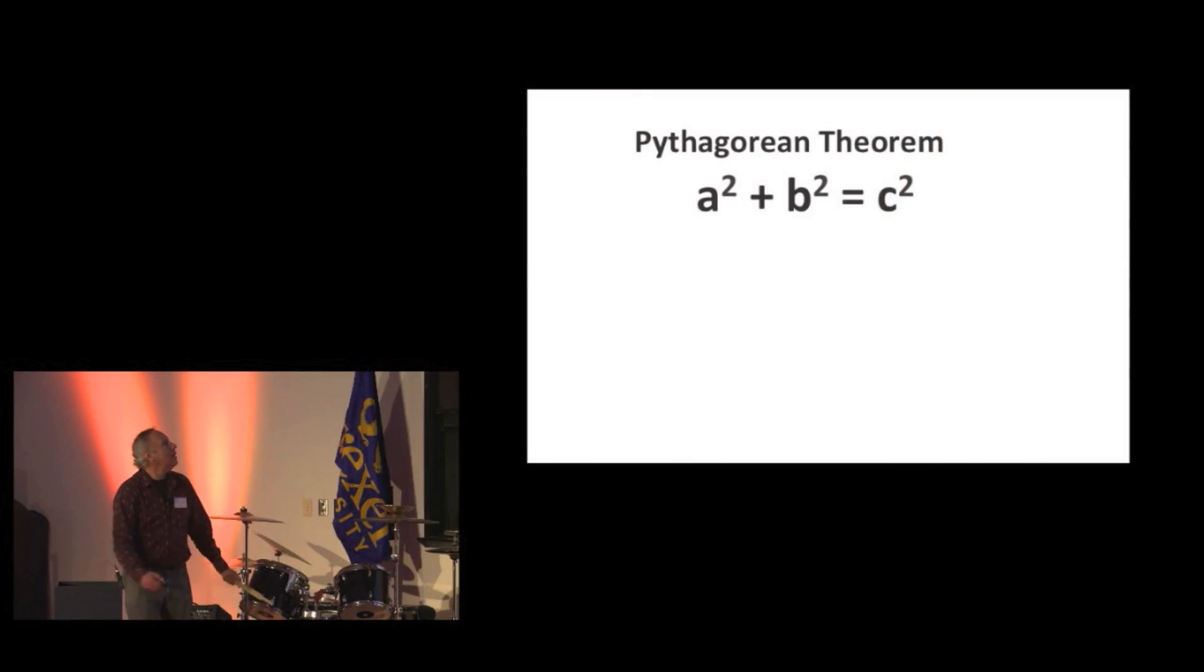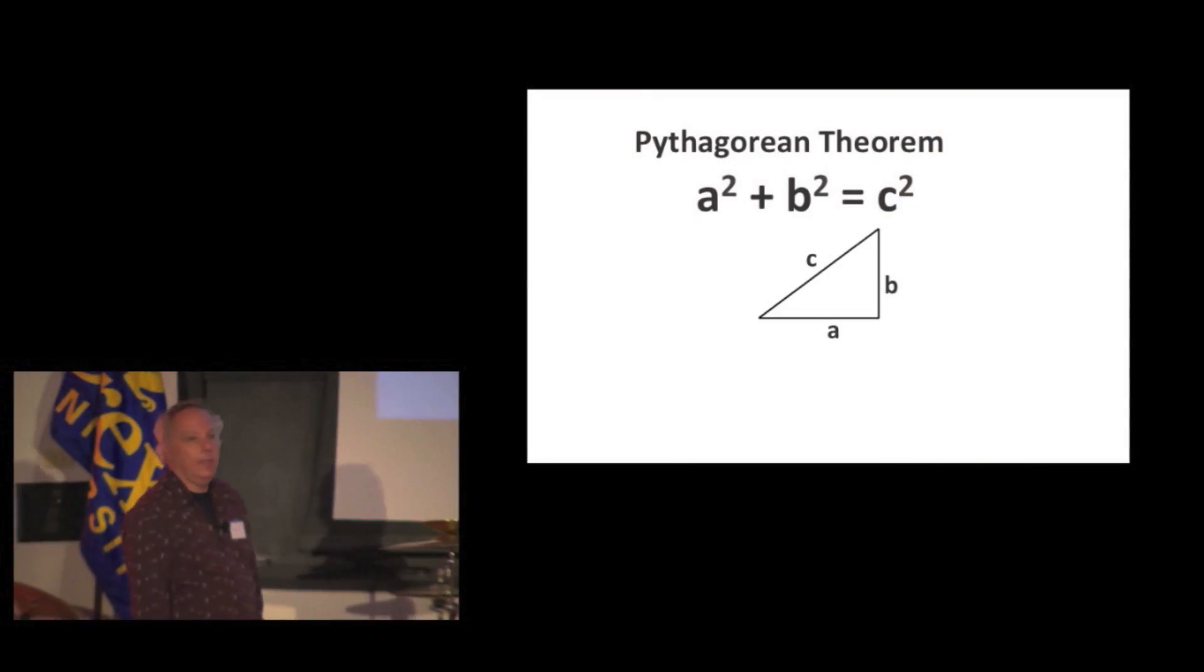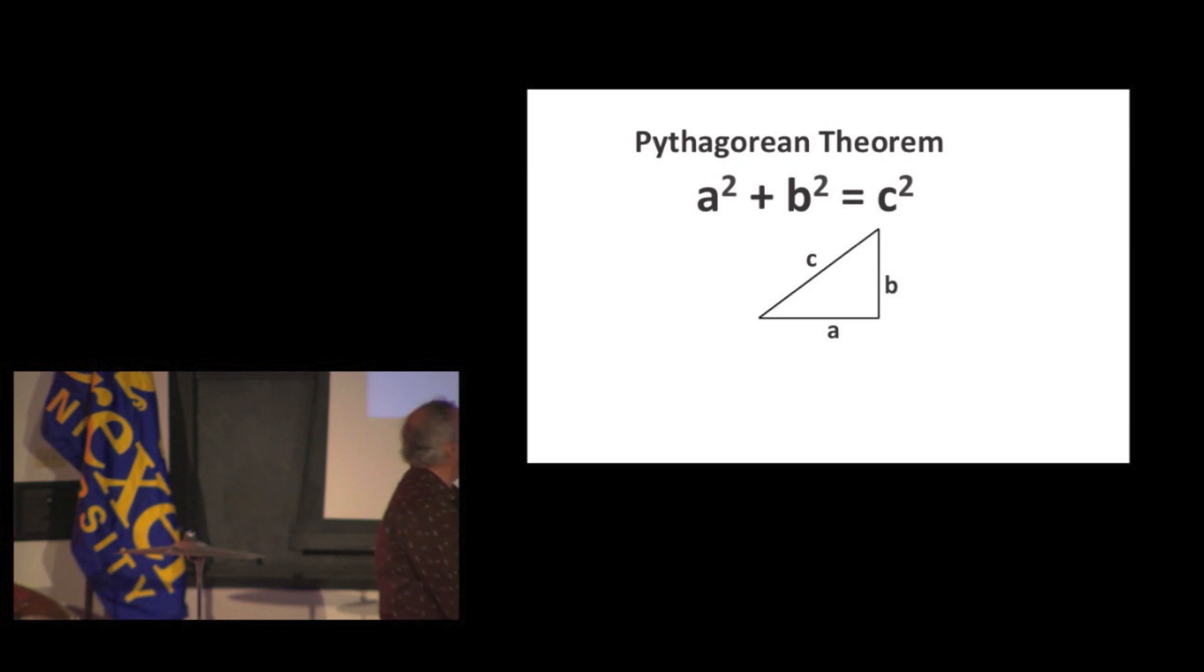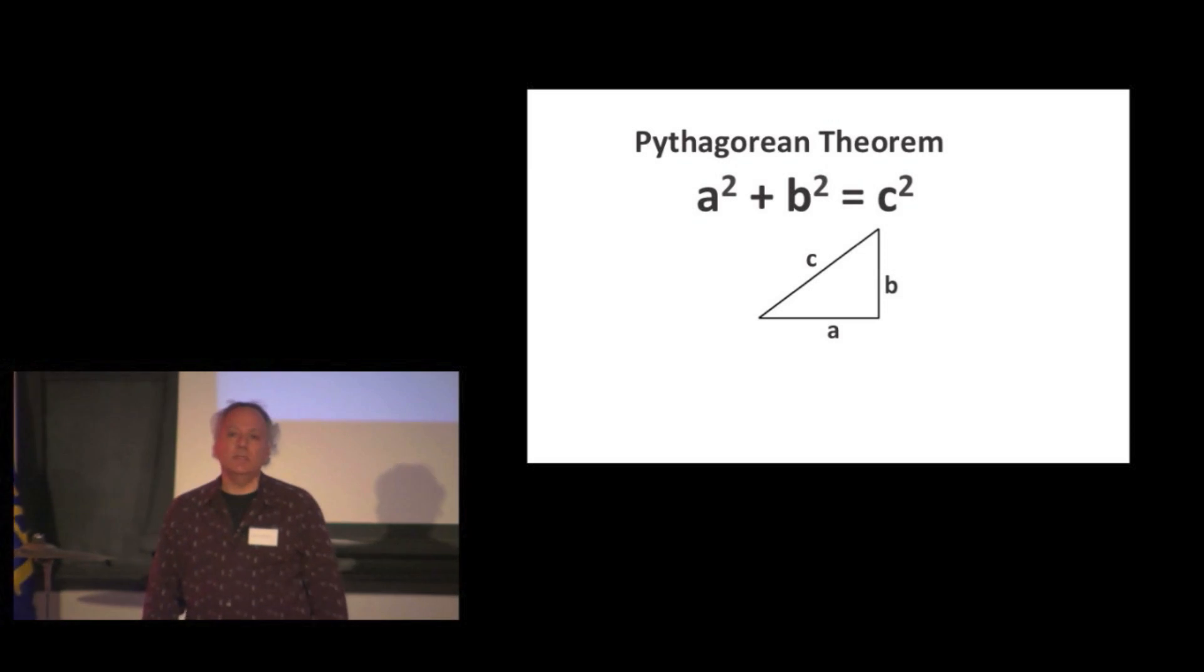Any engineering students out there? Yeah? Okay. All right. So, you've seen this before. So, this is the way I was taught the Pythagorean theorem in school, right? There's a triangle with an A and a B and a C and a little two and a little two over the B and a little two over the C.